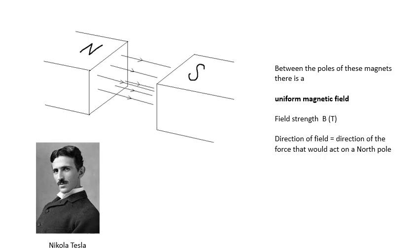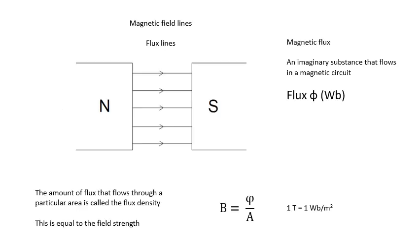The direction of the field is the direction of the force that would act on a north pole. So if I got a little magnet and put it in the field there, and the north pole of that little magnet was there, then the force would be in that direction — so that is the direction of the field. We can represent a magnetic field by drawing magnetic field lines, just as we do with a gravitational field or an electric field.